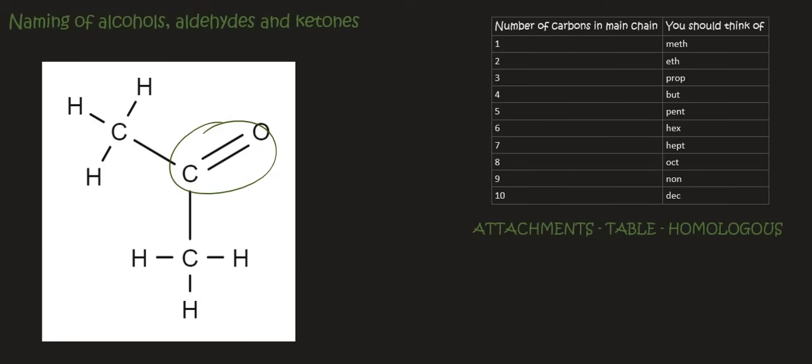Here we have a carbon double bond oxygen between two carbons. So that is a ketone. We've got a 3 carbon chain. And so that's prop. But because it's a ketone, we're going to say propan. And then it's on carbon number 2.